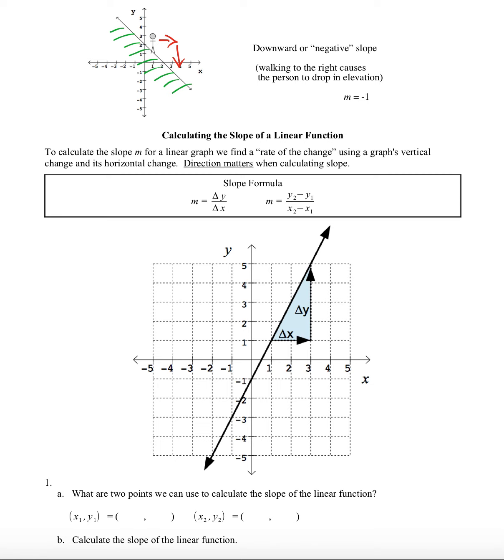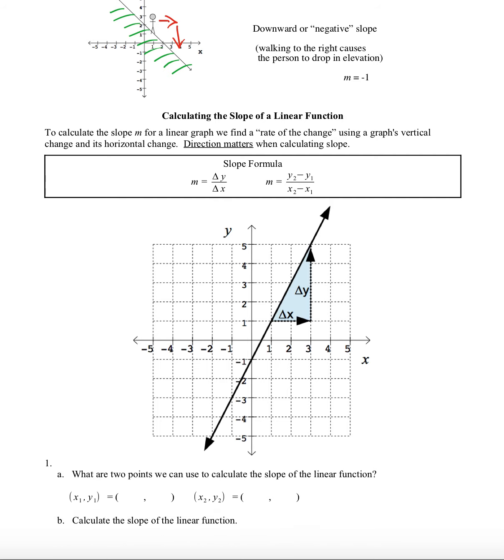And so this is a downward or negative slope. Walking to the right causes the person to drop in elevation, and so our m value is going to be negative to reflect that. In this case, it's a negative 1 slope. All right, what we'd like to do now is find out how we actually calculate those m values.